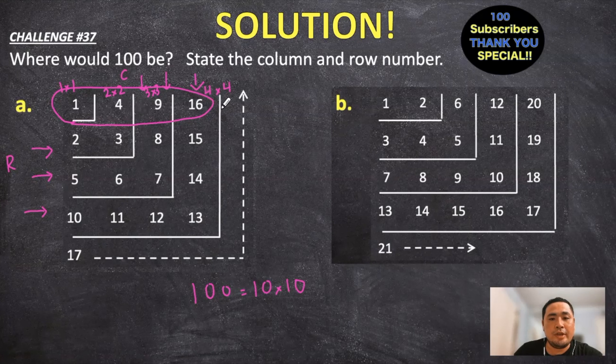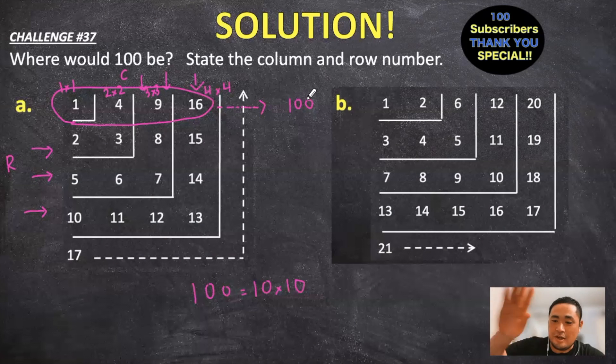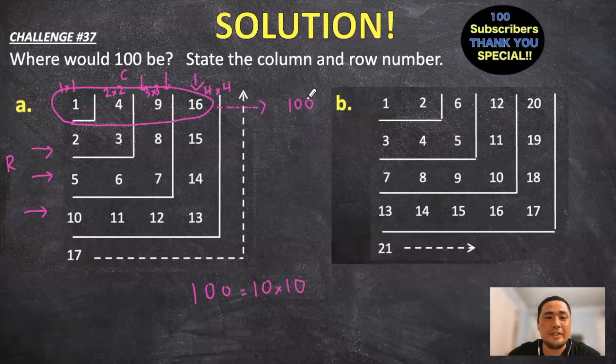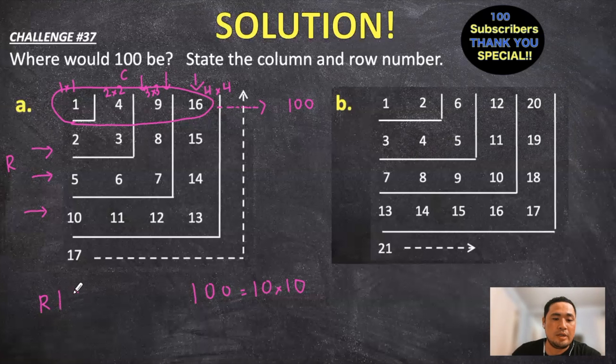So if we knew the pattern going across, we can kind of assume that it will follow suit and the number 100 will go somewhere along the right side of the diagram. So it'll still be on the first row across, and then it'll be your 10th column going down. So for the answer we can write row 1 and column 10.